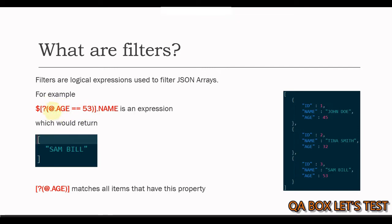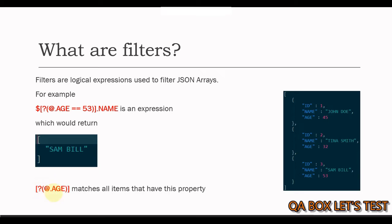This @ symbol represents each item, and age is basically the property that is associated with these items. Then you have the operator equal to, and then you specify the criteria value. This particular filter expression would return a sample from this particular JSON array dataset. Now, an expression that specifies just a property name, such as @.age, matches all items that have this property regardless of the value.